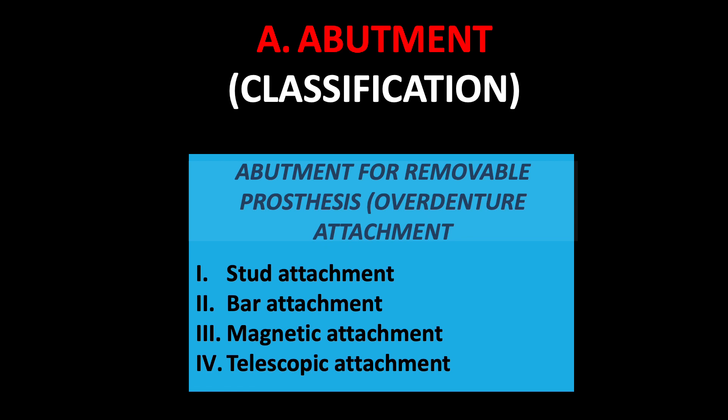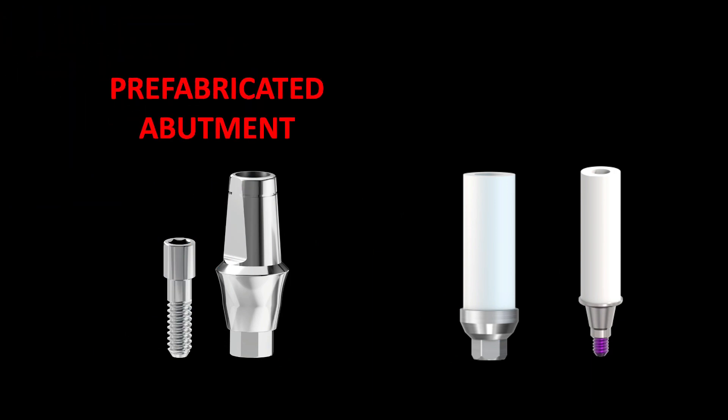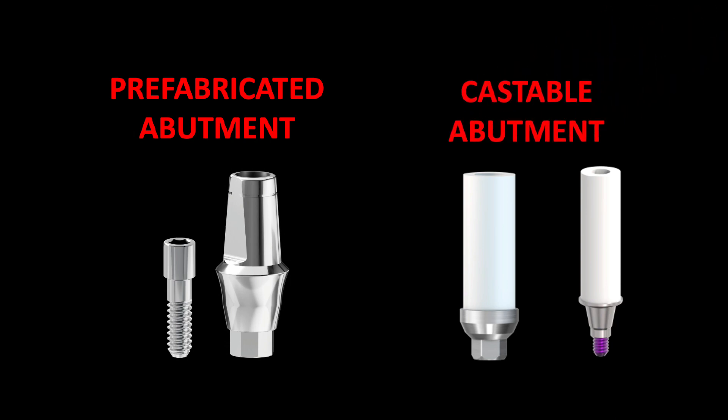Now the abutment for removable prosthesis — that is overdenture attachments. In attachments we have stud attachment, which is very commonly used; bar attachment, used in multiple implant cases; magnetic attachments; and telescopic attachment. Looking at the figure, the first is a prefabricated abutment used for cement-retained prosthesis, and the second is a castable abutment used for screw-retained prosthesis.